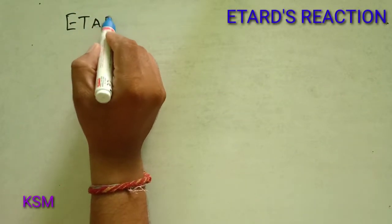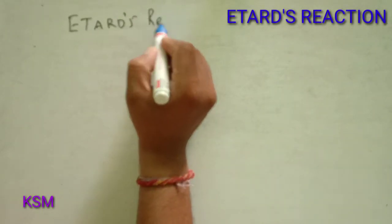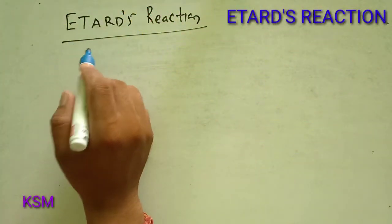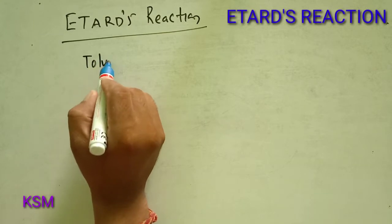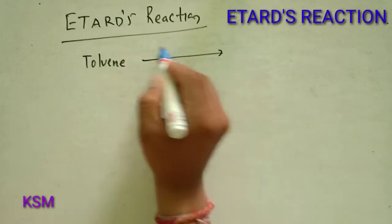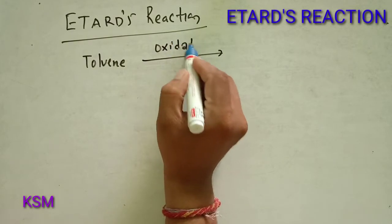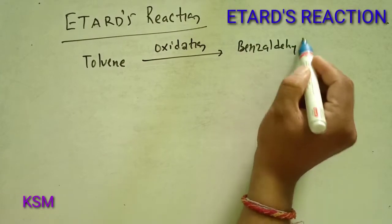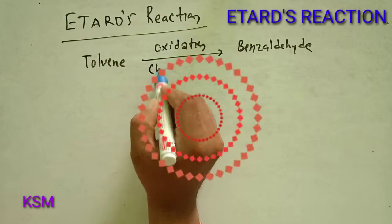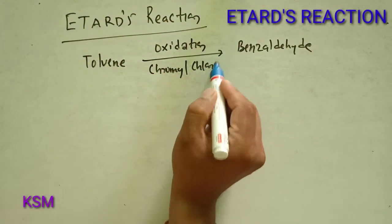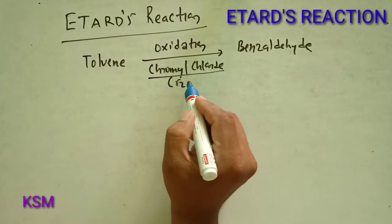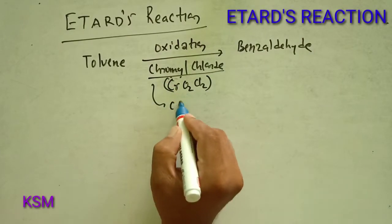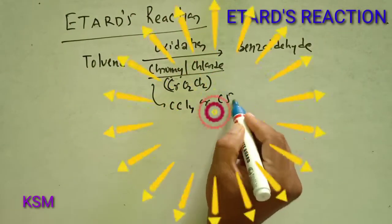This is Etard's reaction, a named reaction in organic chemistry. In this reaction, toluene is getting oxidized to benzaldehyde in the presence of chromyl chloride CrO₂Cl₂, which is dissolved in carbon tetrachloride or carbon disulfide solvent.